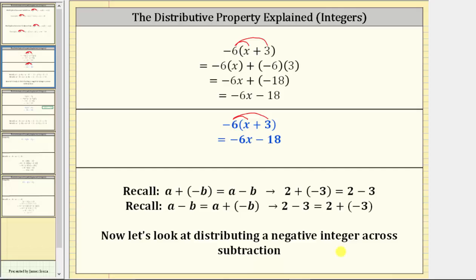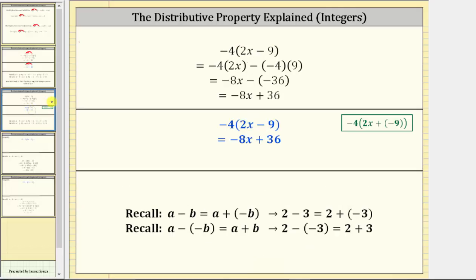Now let's take a look at distributing a negative across subtraction. Let's begin with the expression negative four times the quantity two X minus nine. To clear the parentheses, we distribute negative four, which gives us negative four times two X minus negative four times nine. Simplifying, negative four times two X is negative eight X, and negative four times nine is negative 36. Notice here we have minus negative 36, which is equivalent to plus 36, and therefore the final expression is negative eight X plus 36.